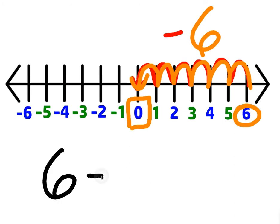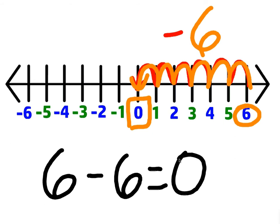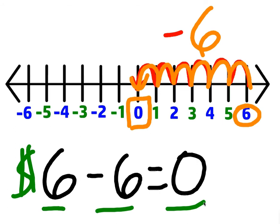The way to write that is: if I start out with $6 and you took $6 away from me, then I would have no money. So you're always just subtracting the number you started with.